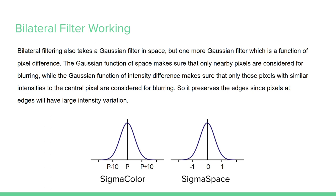So bilateral filter working in one sentence is Gaussian filter on space as well as pixel values. So the Gaussian function on space makes sure that only nearby pixels are considered while blurring, while the Gaussian function on intensity difference, that is pixel values, makes sure that only those pixels with similar intensities to the central pixel are considered for blurring. So it preserves the edges because we learn that edges have a lot of intensity difference.